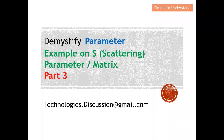Welcome to the technologies discussion channel. Today I'd like to continue the discussion on parameters. I have previously discussed Z (impedance) parameters, Y (admittance) parameters, and S parameters in a part one and part two series. In this video, I'm going to discuss an example of how we can extract or obtain the S parameters — for example, from a 3dB attenuator. This will be the part three series discussion on S parameters.